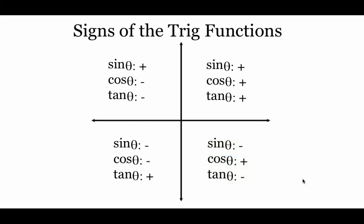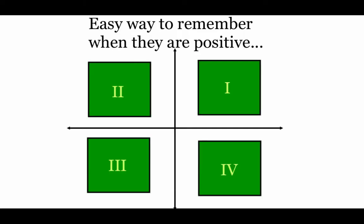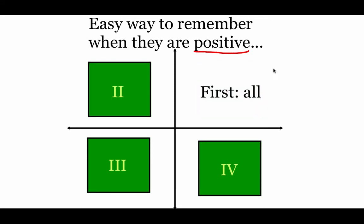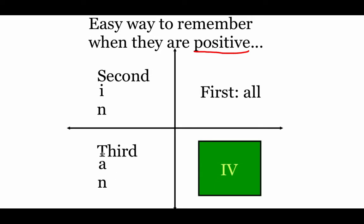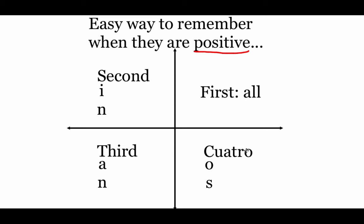In the fourth quadrant, the negative y makes sine negative, the positive x makes cosine positive, and mixing those signs gives a negative tangent. A helpful memory trick: in the second quadrant, sine is positive (second and sine both start with S); in the third, tangent is positive (third and tangent both start with T); and in the fourth, calling it 'quadrant quattro,' cosine is positive since quattro and cosine both start with C.